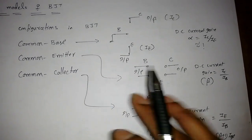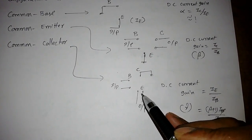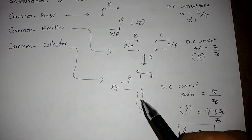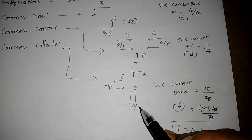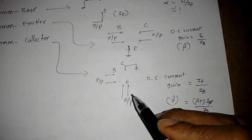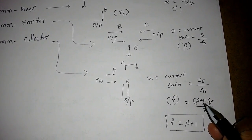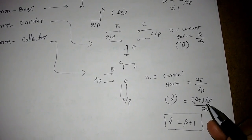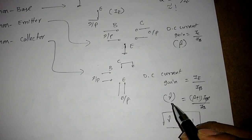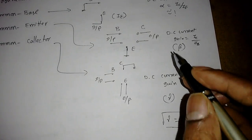For common collector configuration, the collector is common to both base and emitter. We apply input at the base and take output at the emitter. The DC current gain is IE divided by IB. Since IE equals (beta + 1) times IB, the common collector current gain gamma equals beta plus 1.